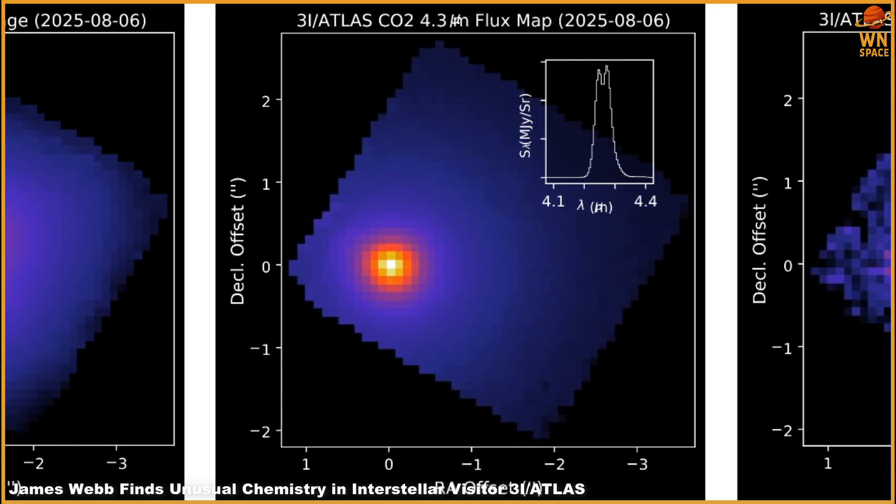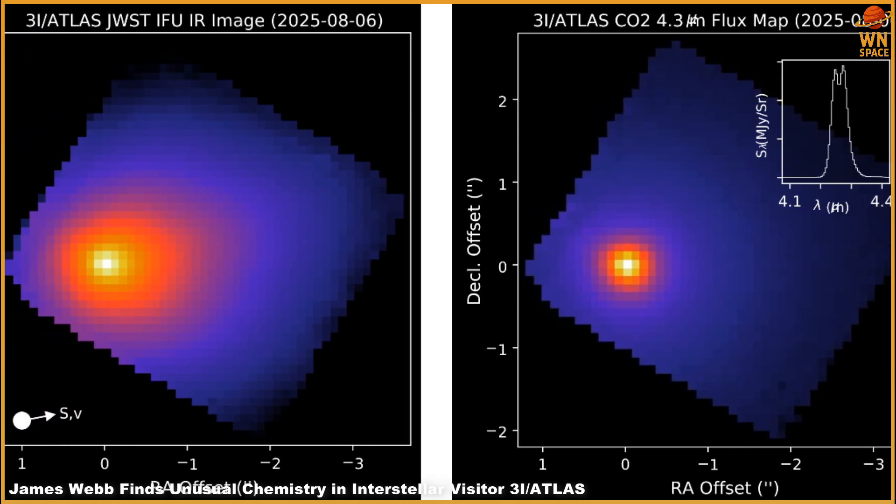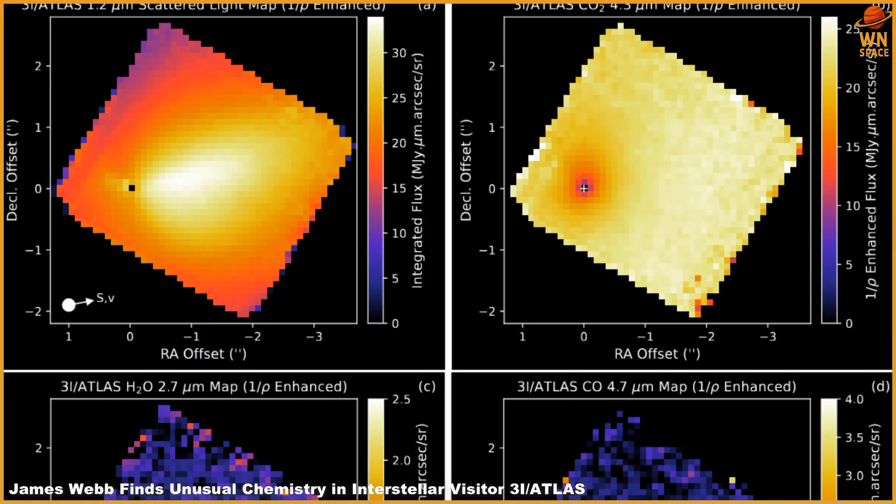On July 21st, the Hubble Space Telescope captured stunning images of 3I Atlas, showing a dusty, teardrop-shaped halo called a coma, surrounding its hidden nucleus.